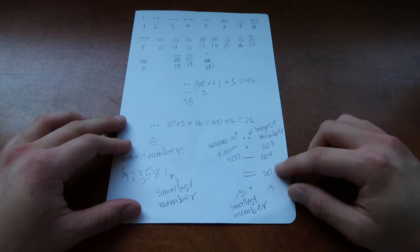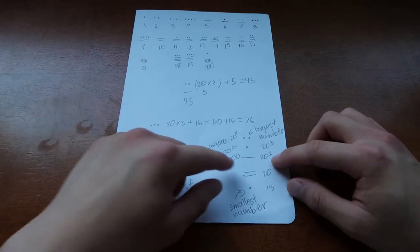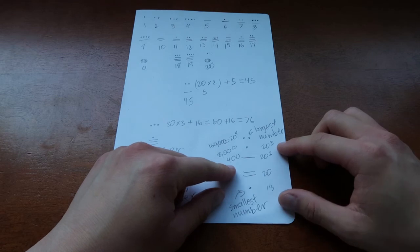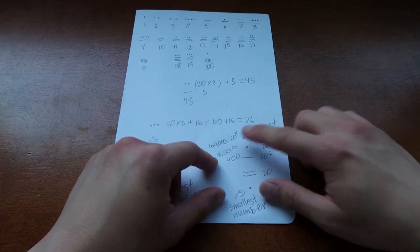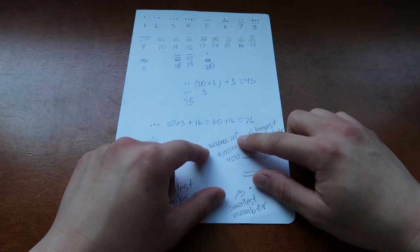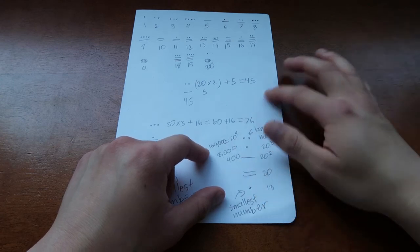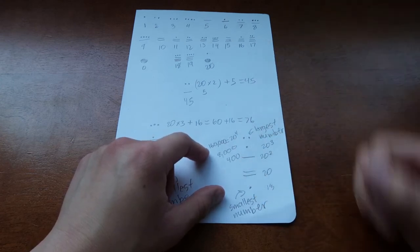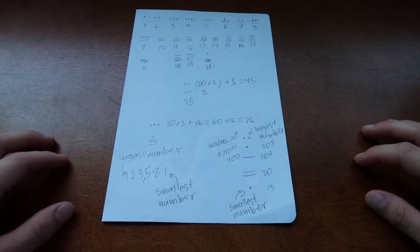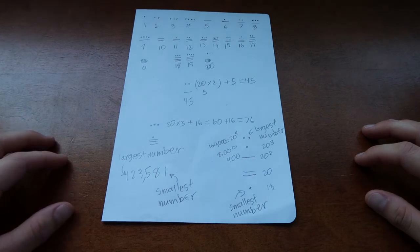So 1s place, 20s place, 20 squared, which is 400. 20 cubed, 8000. 20 to the 4th, 160,000. And you can keep going to infinity, as big as you want, basically. So yeah, that's the Mayan numbers.